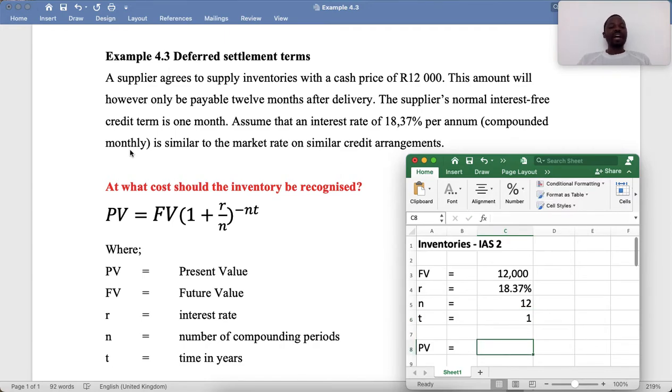Now let's calculate the present value using this formula that we have here. We will say future value multiplied by 1 plus interest rate divided by the number of compounding periods to the power minus, we'll put brackets there, minus N which is number of compounding multiplied by time in years like that, then we enter.